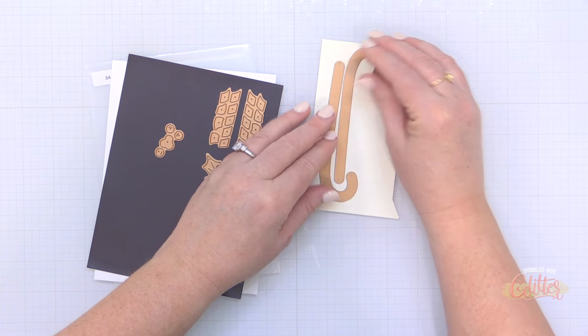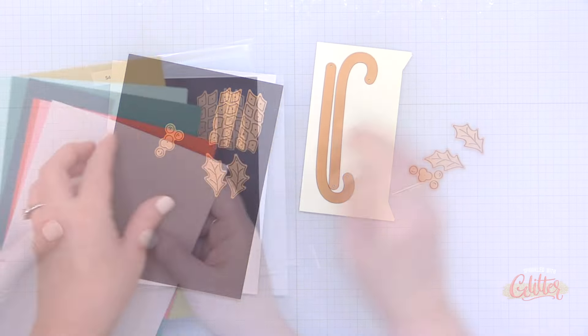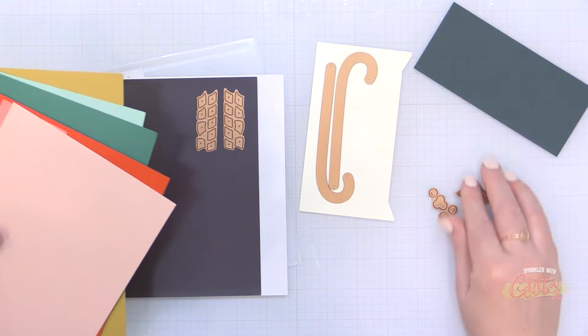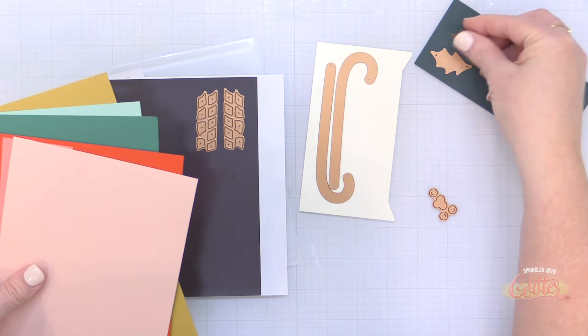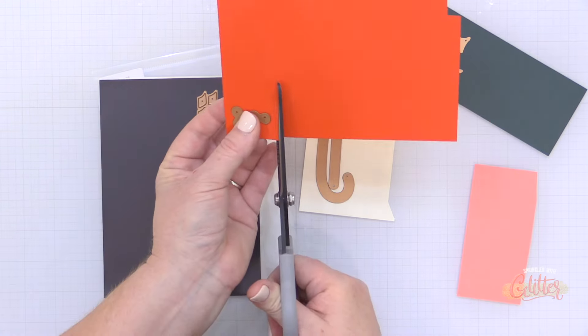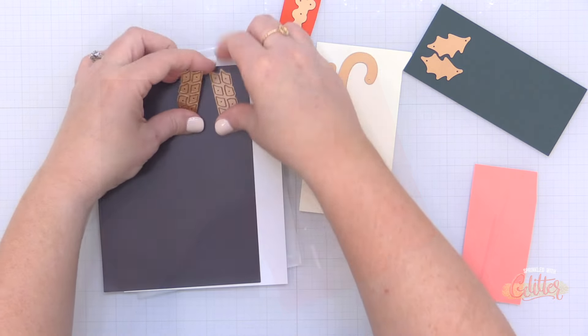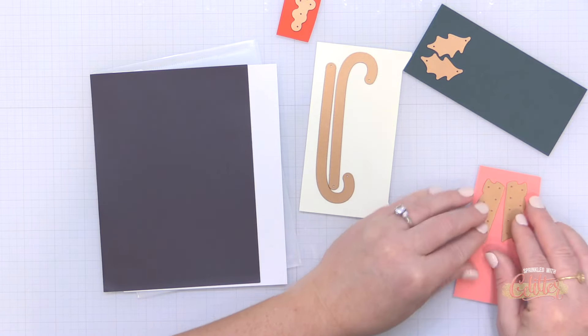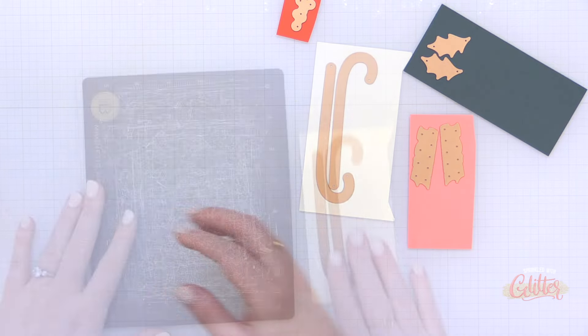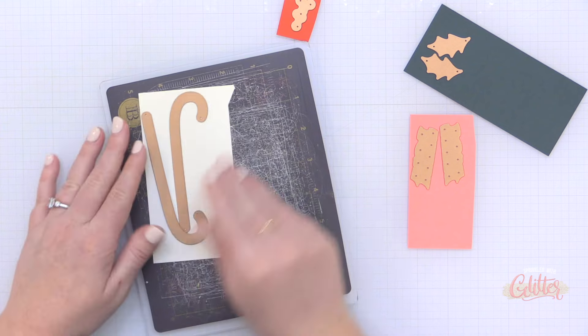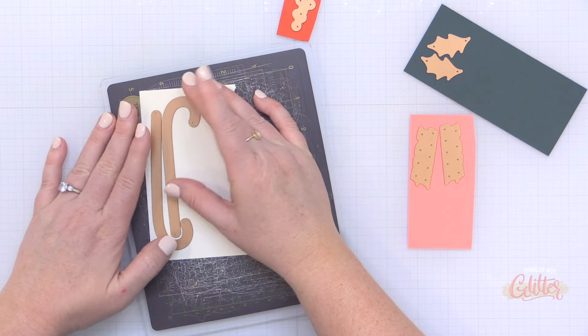I am going to start by die cutting these dies from various colors of cardstock. For the candy cane base I am using antique ivory cardstock from Hero Arts. For the holly leaves I'm using Rainforest. For my holly berries I am using a splash of Poppy cardstock and the Poppy tends to come in in little splashes.